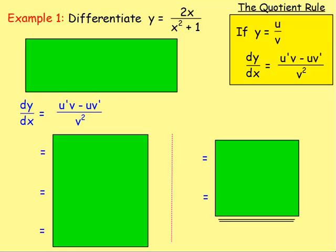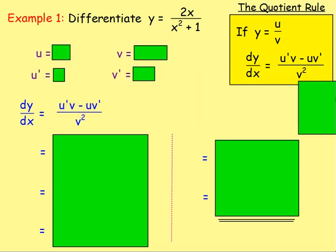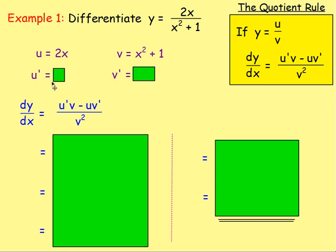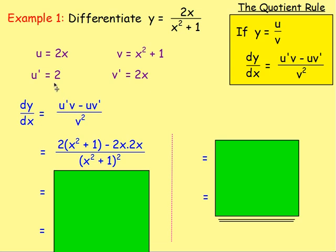Example 1: differentiate y equals 2x over x squared plus 1. We know it's the quotient rule because we have one function divided by another, both in terms of x. So we write down u and v. u is going to be 2x, and v is going to be x squared plus 1. Differentiating: u' equals 2, and v' equals 2x. To work out dy/dx using the quotient rule — u'v minus uv' over v squared — substituting in: u' times v is 2 times (x² + 1), take away u times v', so 2x times 2x. Divide by v squared: (x² + 1) all squared.